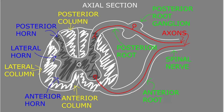The tissue of the central nervous system is divided into areas called white matter and gray matter. White matter contains many myelinated axons, and gray matter contains many neuron somas. In an axial section of the spinal cord, the gray matter is on the inside and the white matter is on the outside. The gray matter is shaped like a butterfly or the letter H, with bilateral anterior and posterior parts called horns. Some spinal cord levels also have a small lateral horn — these are named the anterior horn, the lateral horn, and the posterior horn.